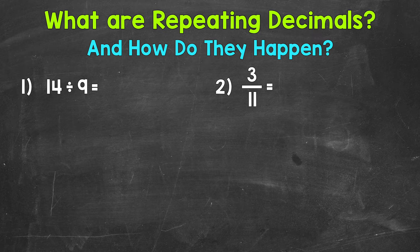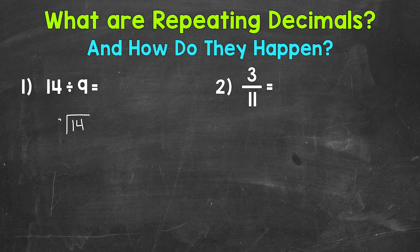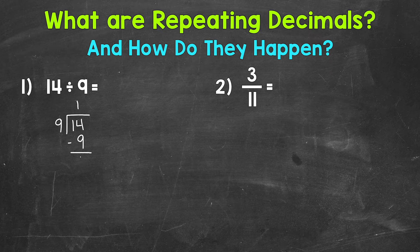Let's jump into our examples, starting with number one where we have 14 divided by 9. Let's set this problem up. So 14 divided by 9 — how many whole groups of 9 out of 14? Well, 1. 1 times 9 is 9. Subtract, we get 5.